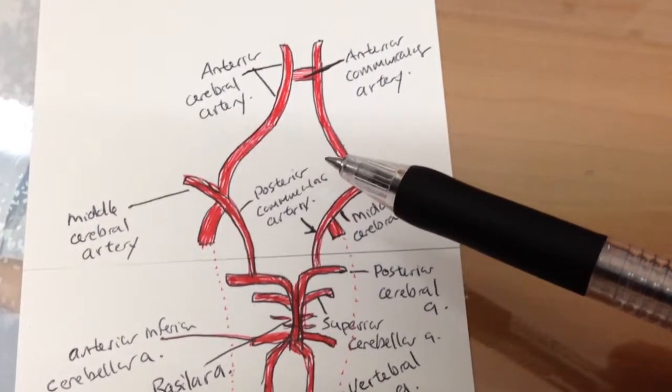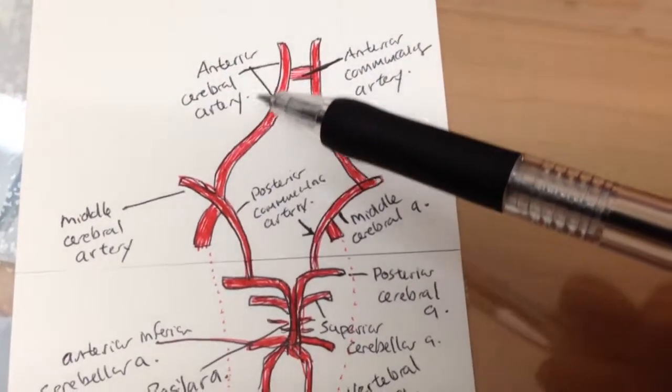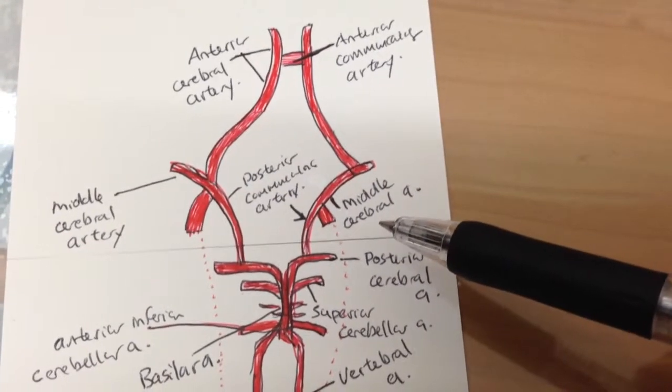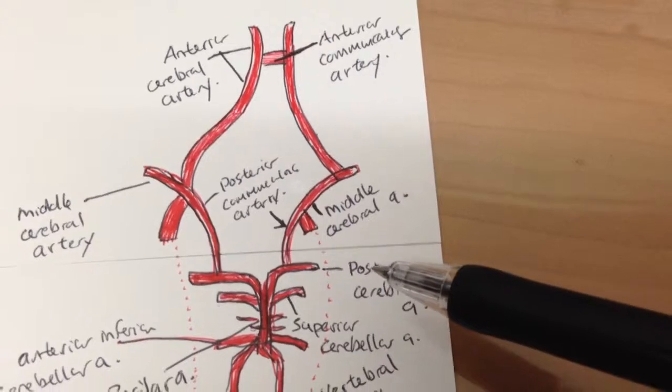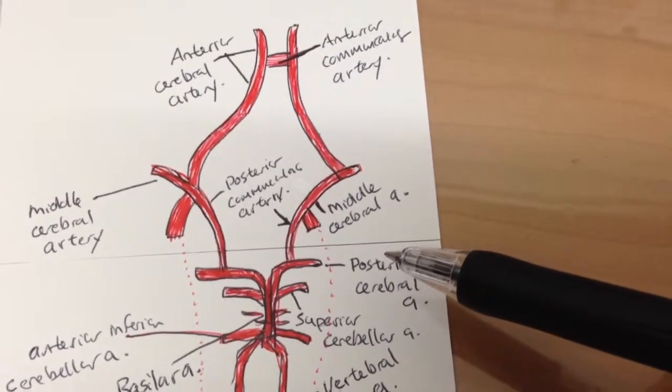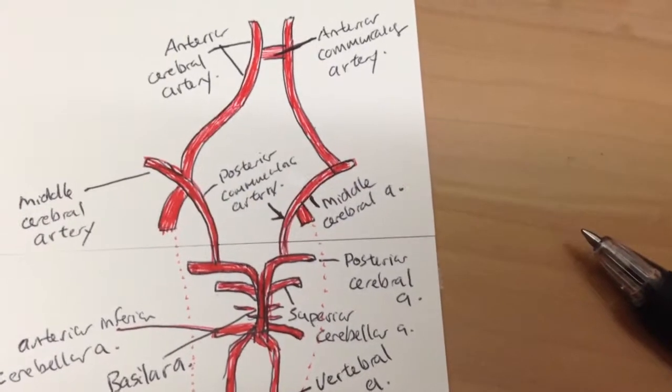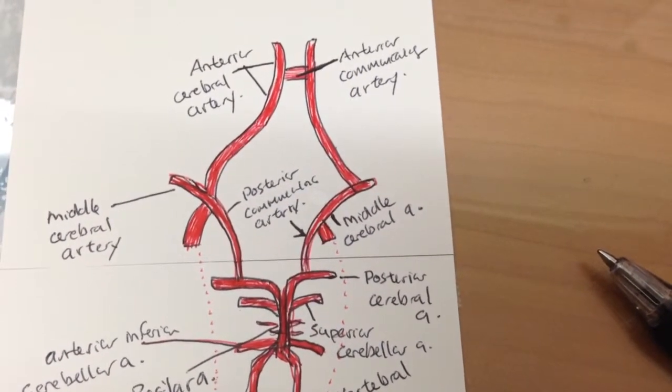Also we should know that for the outflow of the brain in the circle of Willis, let's find the anterior cerebral arteries, the middle cerebral arteries, and the posterior cerebral arteries are bringing the blood out of the brain.